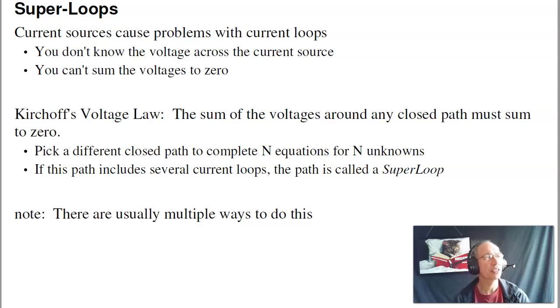In that case, you do a generalized loop. Kirchhoff's voltage law states that the sum of the voltages around any closed path must sum to zero. So rather than choosing a path that only goes around one loop, go around multiple loops. That's called a super loop. And there's usually multiple ways to do that.